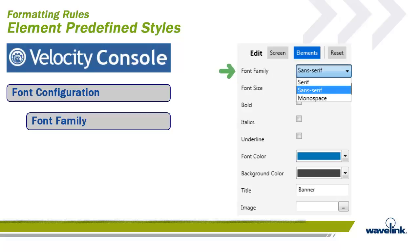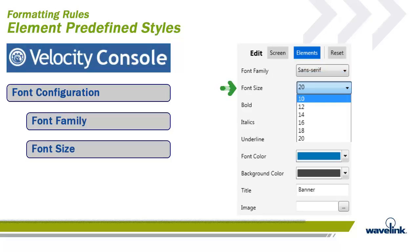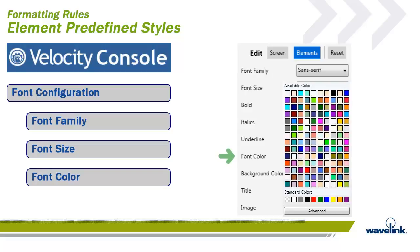The font family specifies which font to use for the element. When this value is set, all elements of the same type are subject to the same font style. The options are Serif, Sans-Serif, and Monospace. The font size specifies the size of the element's font text, adjustable from 10 to 20 points. The default value is dependent on the element type selected. The font color specifies the color of the visual text for the element and does not pertain to the background color.